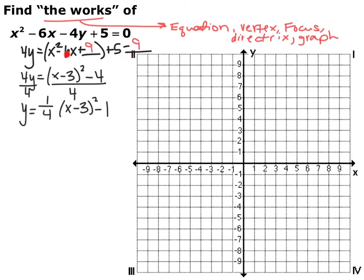Divide b by 2 and square it: 6 divided by 2 is 3, squared is 9. We added 9, so we subtract it back off. Make it the perfect square: keep your sign, so x minus 3 quantity squared minus 4. Divide everything by 4: y equals 1/4 times (x minus 3) squared minus 1. Now you're in vertex form — you can read off the vertex. Pause the video, find the vertex, use your a value to find the focus and directrix, and graph.